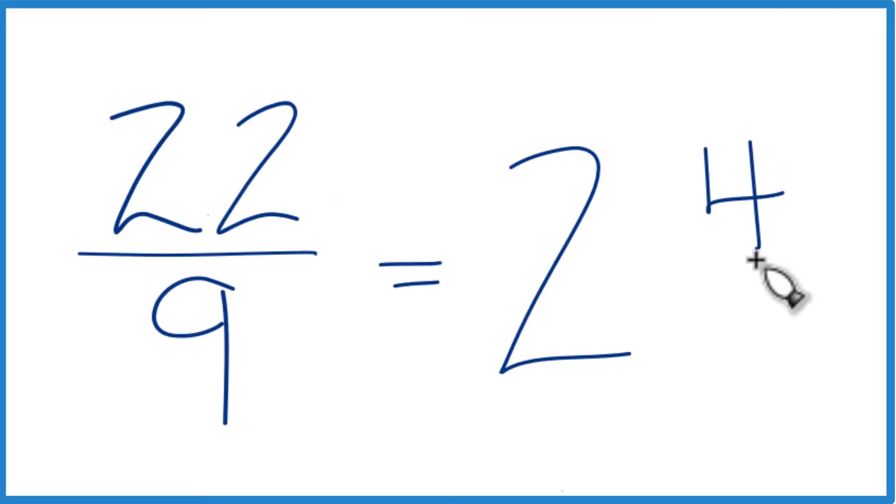And then we just bring the 9 across. So we got the 4 because 2 times 9 is 18, 22 minus 18 is 4, that's our remainder. And we can check this.